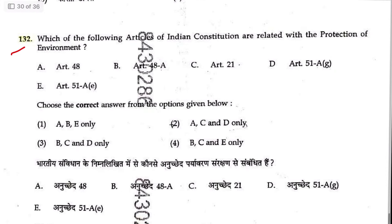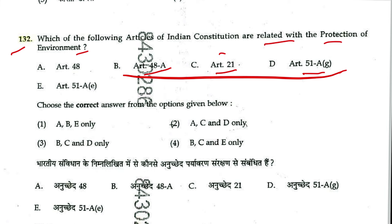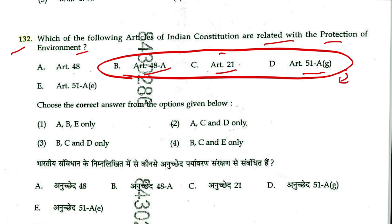Question 132: Which articles of the Indian Constitution are related to protection of the environment? Article 48A — yes. Article 21 — yes (as interpreted through case law). Article 51A(g) — yes. Article 14 — indicates equality for all persons. Answer includes Articles 48A, 21, and 51A(g), giving B, C, D. Answer is 3.